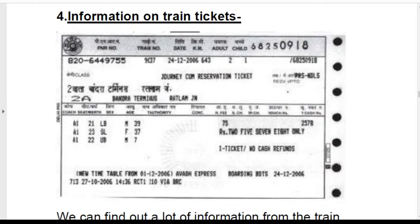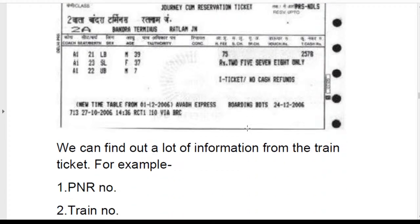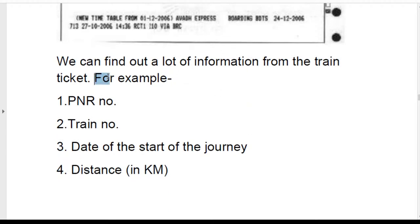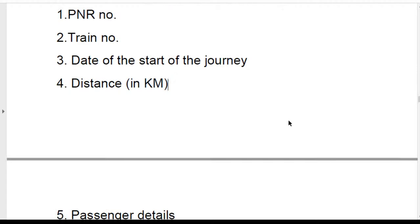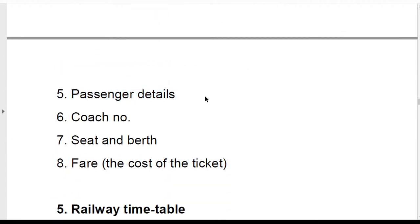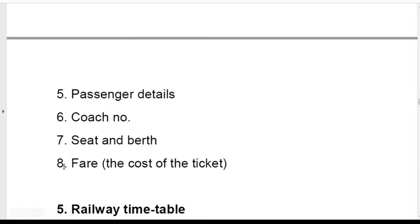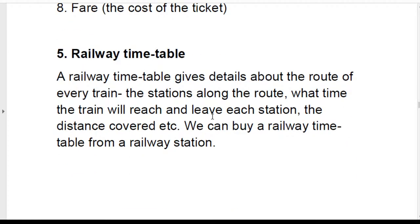PNR number has been cleared. From a train ticket you can get: PNR number, train number, date of start of journey, distance in kilometers, and passenger details — seat number and birth, and fare, which is the cost of the ticket. I hope that is all clear.